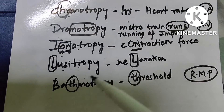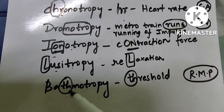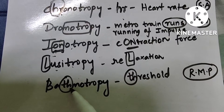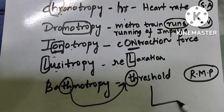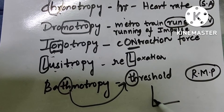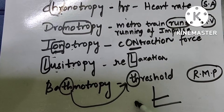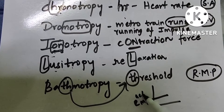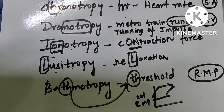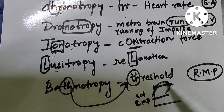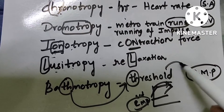And bathmotropy — this is a term we usually neglect, but it is also easy. It is related to threshold: 'Th' is for threshold. So threshold is something related to action potential — resting membrane potential, then action potential, then the threshold. So bathmotropy is related to resting membrane potential.